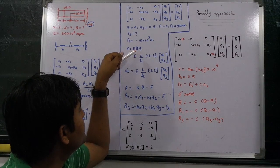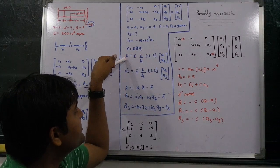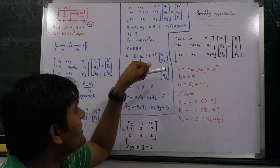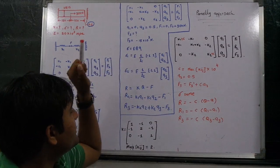Stress is equal to E into B into Q, B is equal to 1 upon L times [-1, 1], Q is equal to Q1, Q2 for stress of the first element, and Q is equal to Q2, Q3 for the second element.